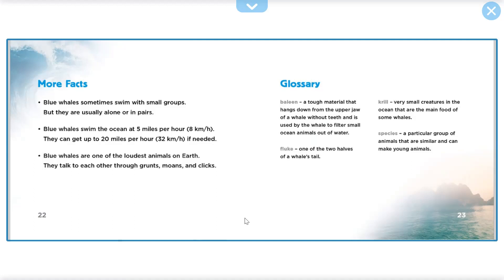Blue Whales swim in the ocean at 5 miles per hour (8 km/h). They can get up to 20 miles per hour (32 km/h) if needed.